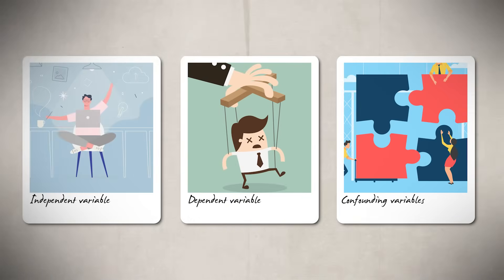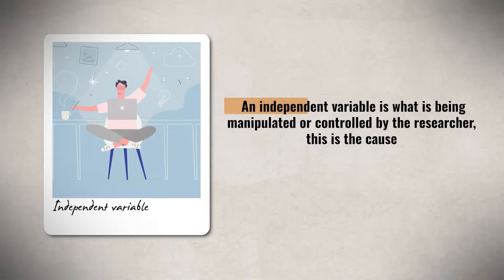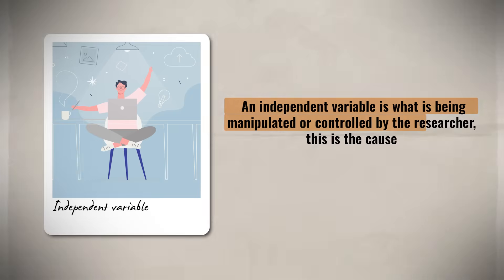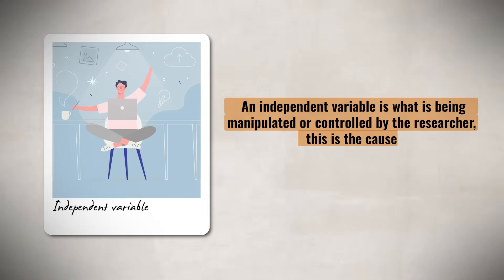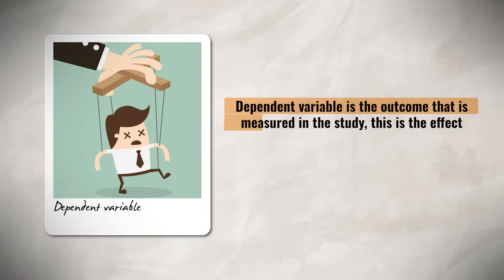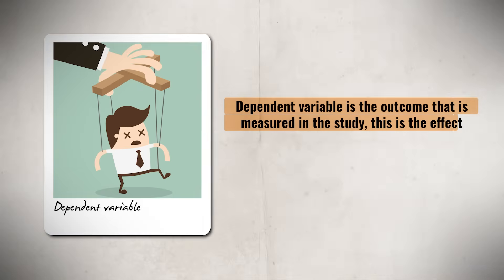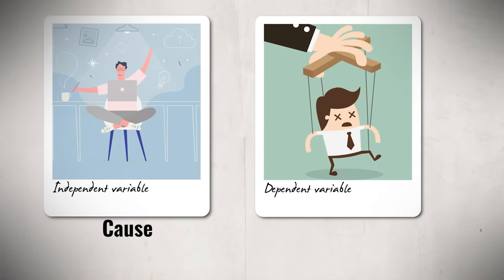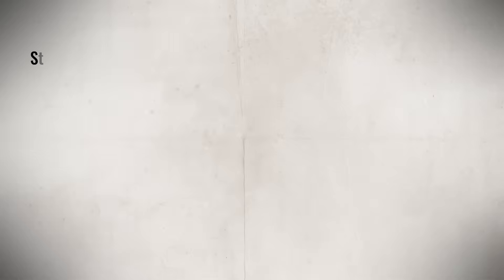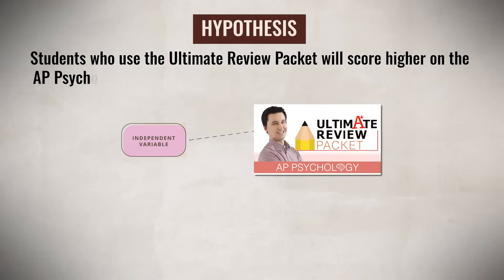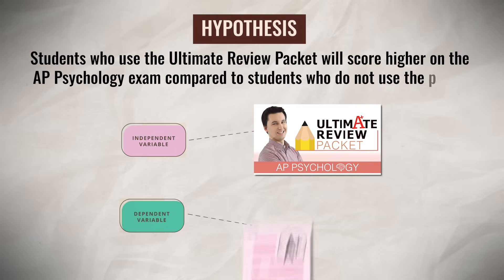Now we need to talk about independent, dependent, and confounding variables. The independent variable is what is being manipulated or controlled by the researcher — this is the cause. The dependent variable is the outcome being measured — this is the effect. For instance, in the review packet hypothesis, the independent variable is the ultimate review packet, while the dependent variable is the exam score.